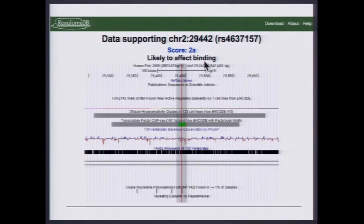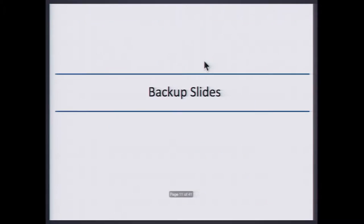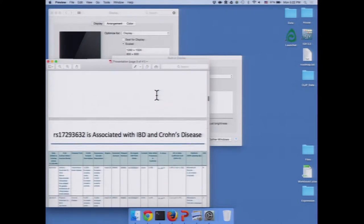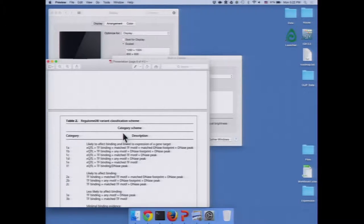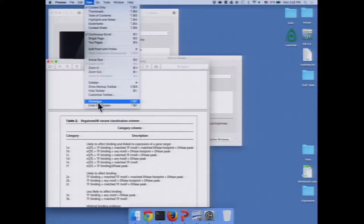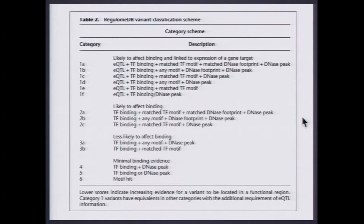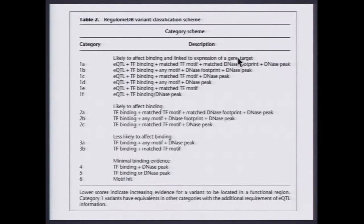If we click on our top SNP, we can see it has a score of 2A, which is likely to affect transcription factor binding. There are different categories depending on which line of evidence overlaps each variant. Category 1 is for variants that have been reported as eQTLs in different published studies. You can break those down further based on whether they overlap a transcription factor binding site from ENCODE, and whether they also overlap a motif. If this motif matches the same transcription factor found in ENCODE, it has a higher score. We also have DNA footprinting data — a small region of DNA actually protected from DNase I — and you can look for a transcription factor motif there as even stronger evidence.